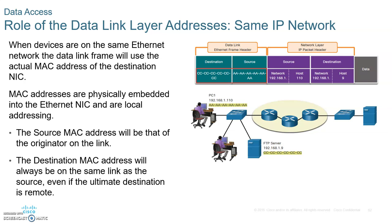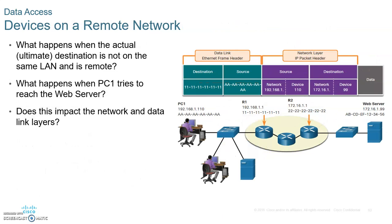An ARP request is like sending a broadcast message to every device in the LAN saying, 'Hey, whoever has this IP address, please give me your MAC.' Pay attention to this example because it's very important, and we'll discuss it in more detail in class.